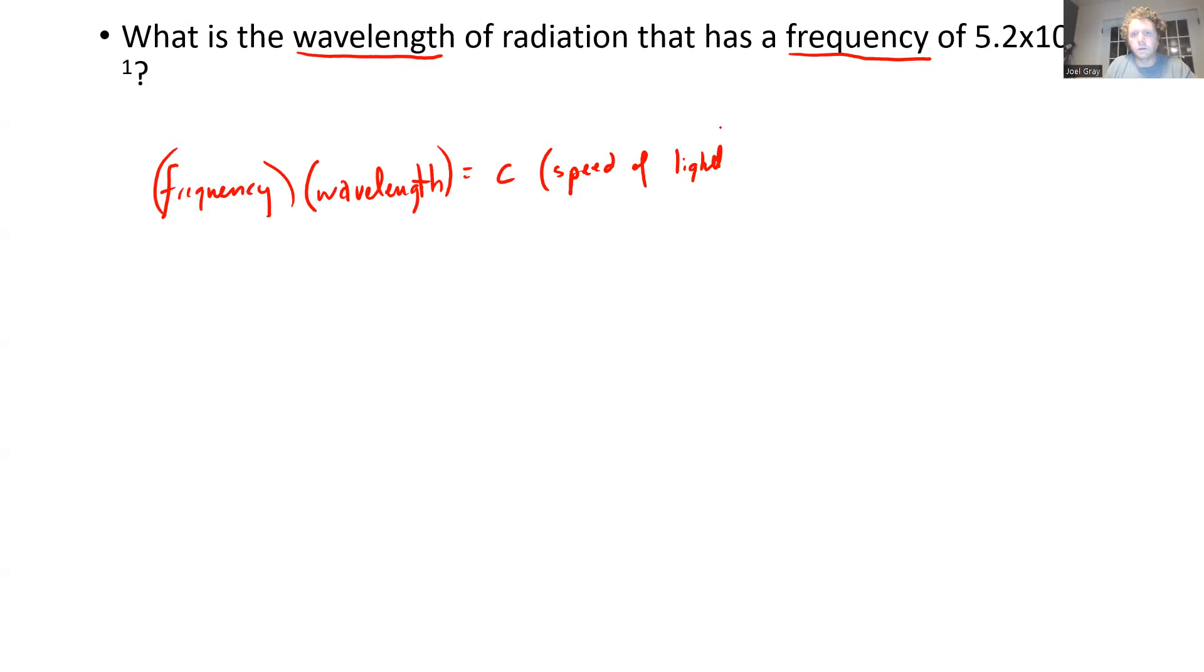Now, the speed of light will be provided to you, and this equation will be provided to you. This is 3.0 times 10 to the eighth meters per second. And so essentially this ends up just being an algebraic question. We're trying to figure out our wavelength. We know our frequency is 5.2 times 10 to the sixth inverse seconds or seconds to the negative first. We don't know our wavelength.